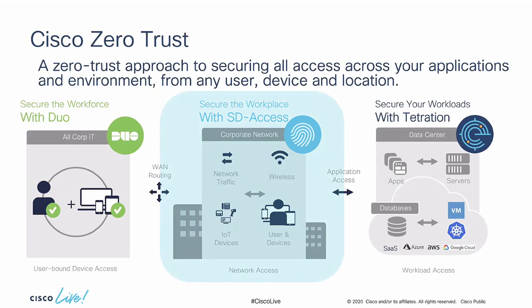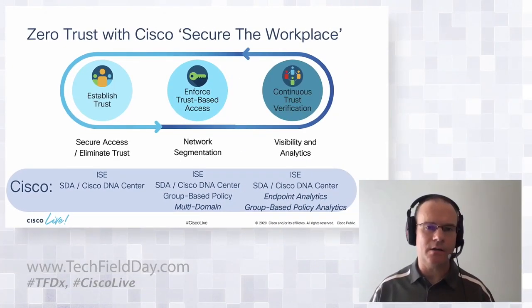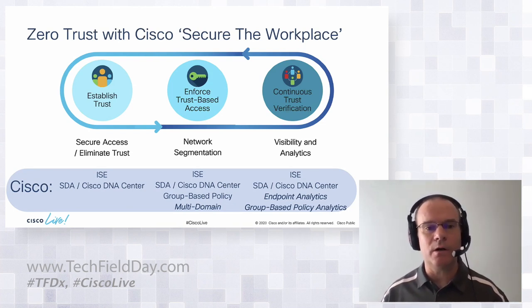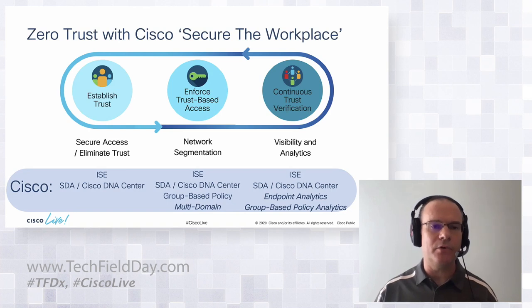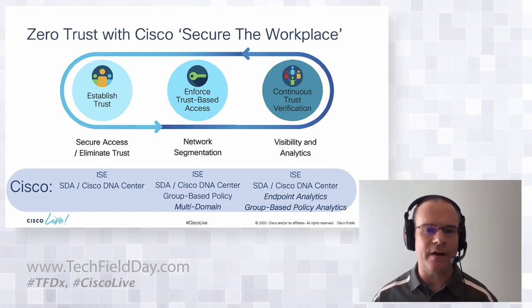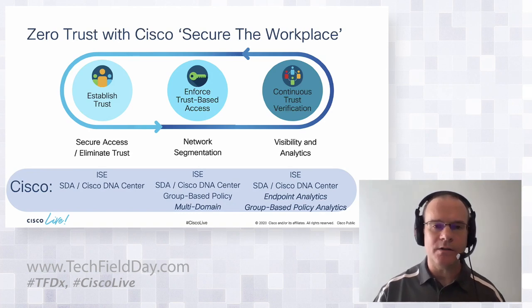Securing the workplace is primarily driven from our campus and branch environments. For a long time on the enterprise network we've been able to establish trust, using the Identity Services Engine and DNA Center to provide a dynamic assessment of users and endpoints as they come on the network. Then we can segment that. We have multiple ways to do it, but we really have to build multi-domain strategies with the evolution of software-defined networking in the WAN, local LAN, and data center. And we need to continually verify what's going on and create visibility. In bold and italics: endpoint analytics, group-based analytics, and scaling out enterprise security policy.